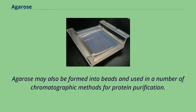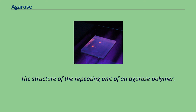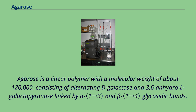Agarose may also be formed into beads and used in a number of chromatographic methods for protein purification. The structure of the repeating unit of an agarose polymer: agarose is a linear polymer with a molecular weight of about 120,000, consisting of alternating D-galactose and 3,6-anhydro-L-galactopyranose linked by alpha and beta glycosidic bonds.